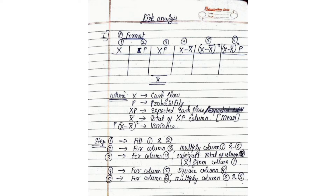In the third column we do the total of expected cash flow, by which we get x-bar — I will call it x-dash. So we get x-dash as the total of expected cash flow. Now in the fourth column we need to do x minus x-dash, where x comes from the first column and x-dash from the third column total. Then in the fifth column we do the square of (x minus x-dash), and in the sixth column we do (x minus x-dash)² into the probability. The total of the sixth column will be known as your variance.